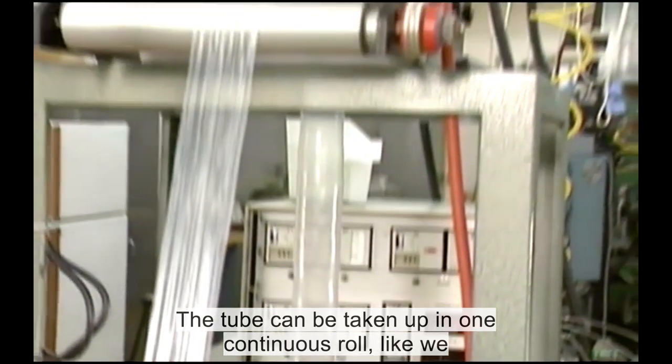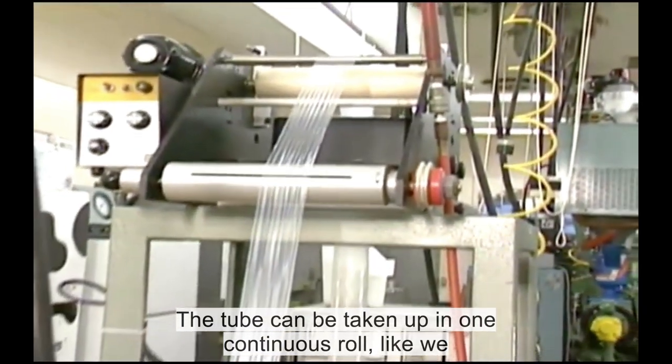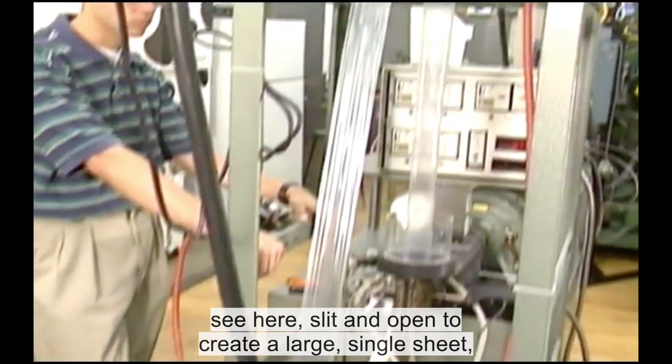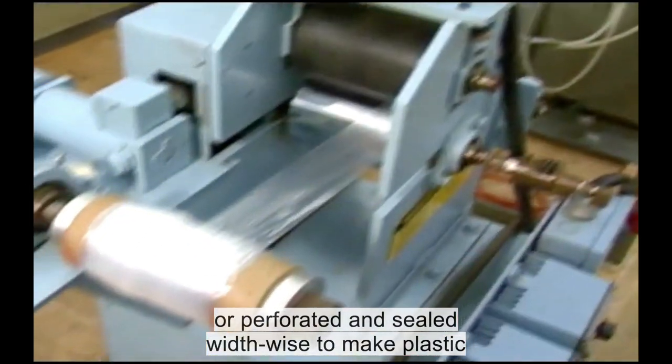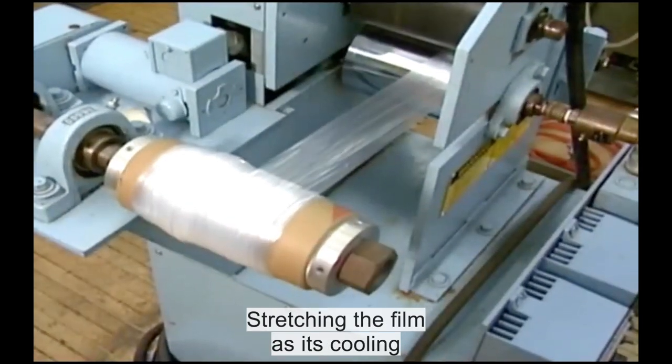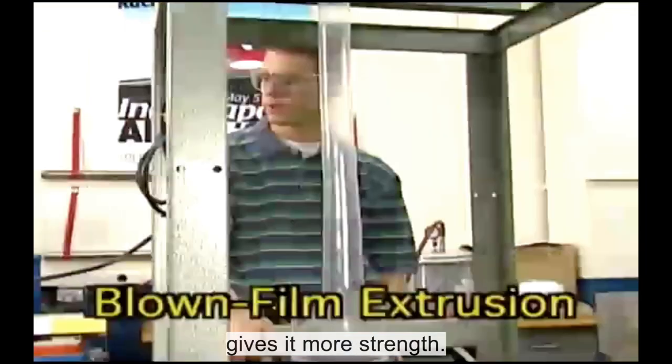The tube can be taken up in one continuous roll, like we see here, slit and opened to create a large single sheet, or perforated and sealed width-wise to make plastic trash bags. Stretching the film as it's cooling gives it more strength.